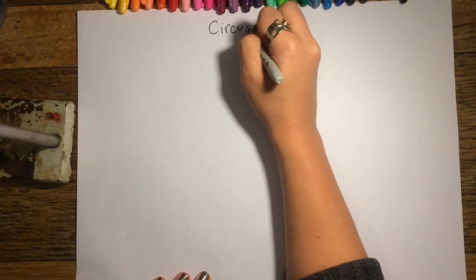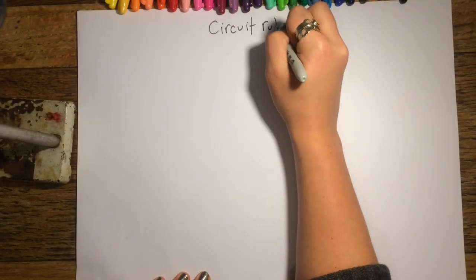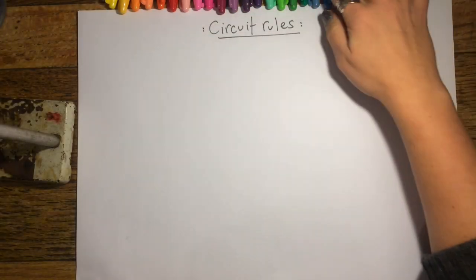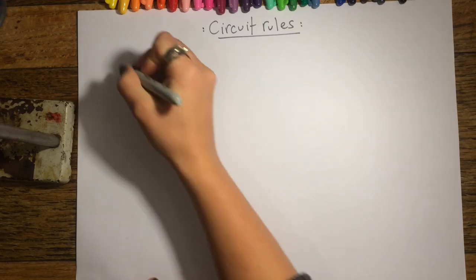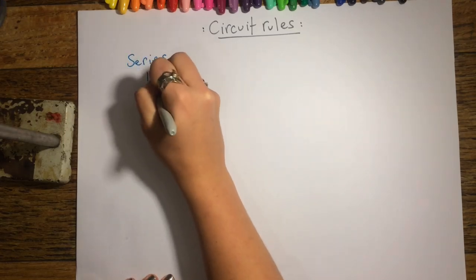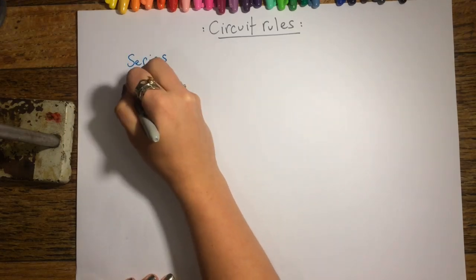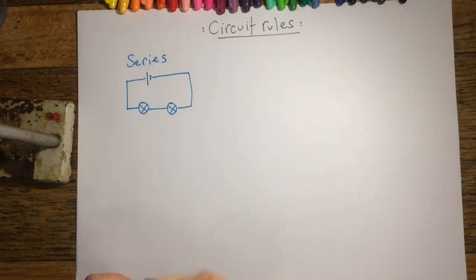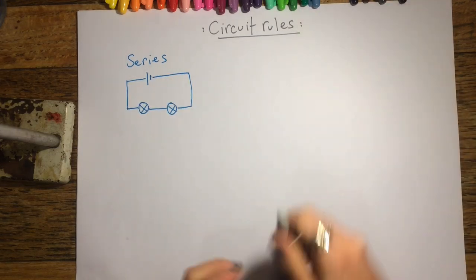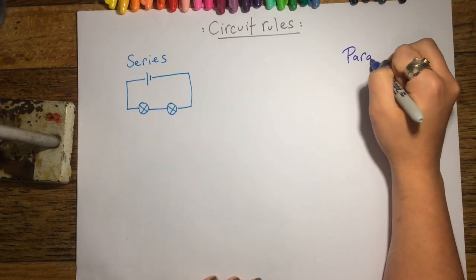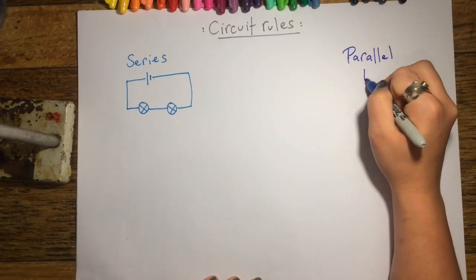This video is about circuit rules. You need to be able to identify a series and a parallel circuit just from looking at a diagram. You also need to be able to explain what happens to the current, the potential difference, and the resistance in each circuit.